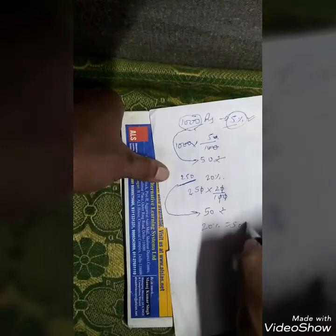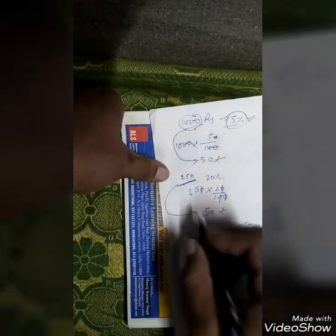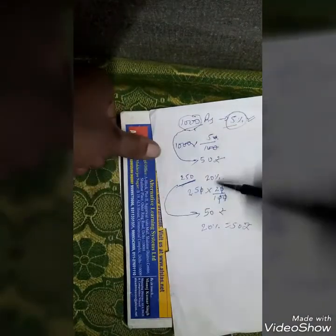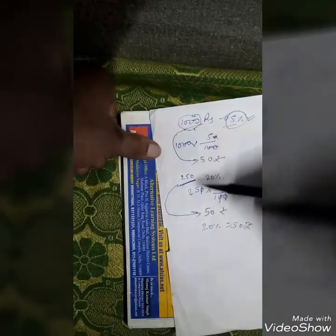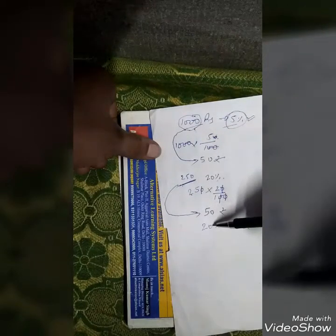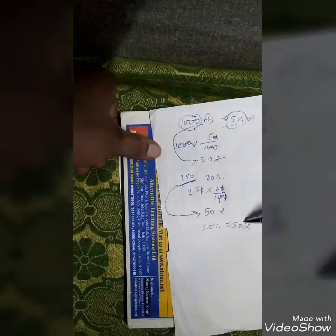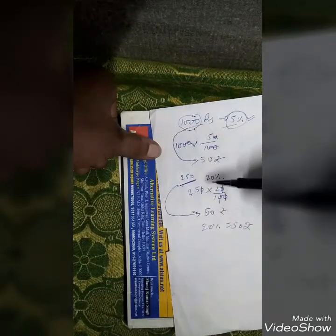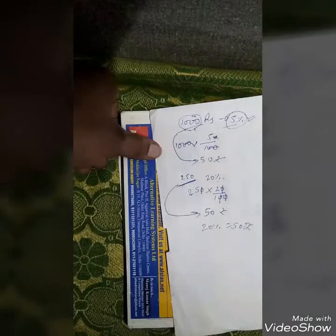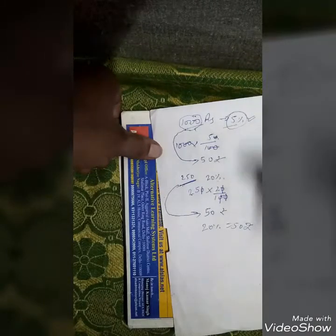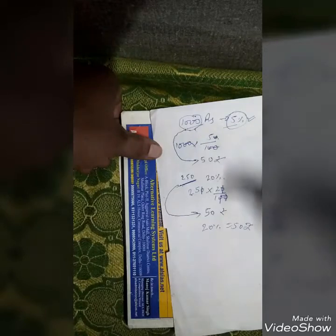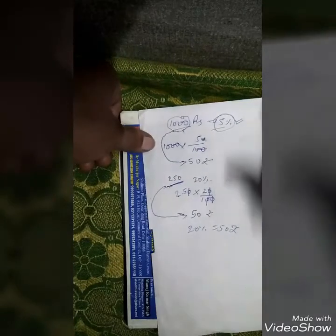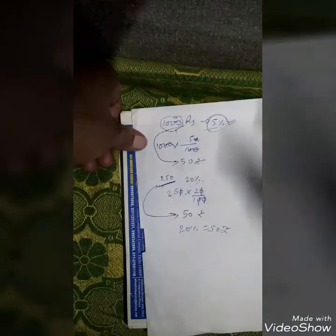Yaani ki iska bhi jo 20 percent hai woh 50 rupiah hai. Toh yeh bahut easy hai — 20 percent equal 50 rupees, chahe tum 20 percent lo ya 250 rupiah ka 20 percent lo — woh 50 rupiah hai. Isi tariqa se hameih percentage nikalna hai, bahut easy hai.